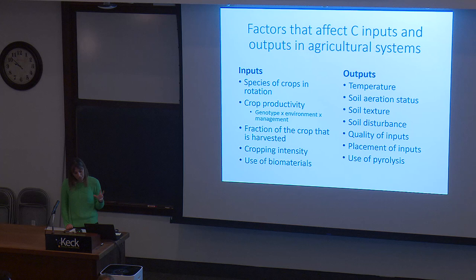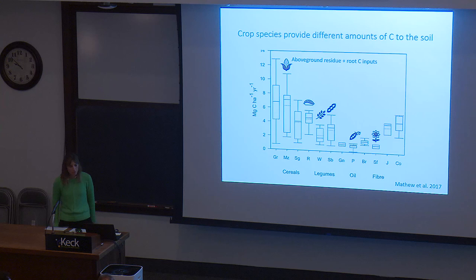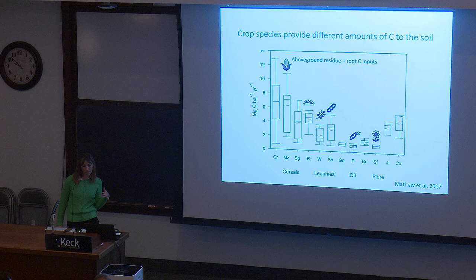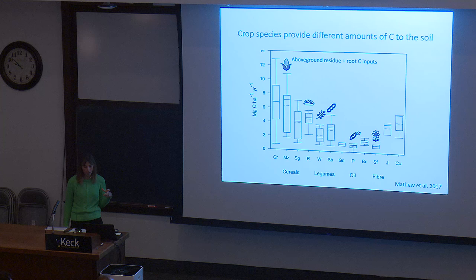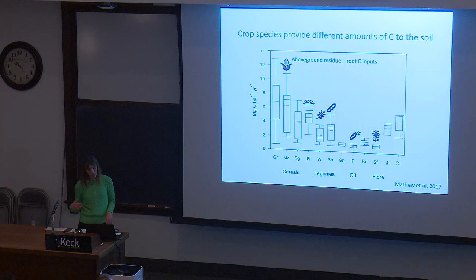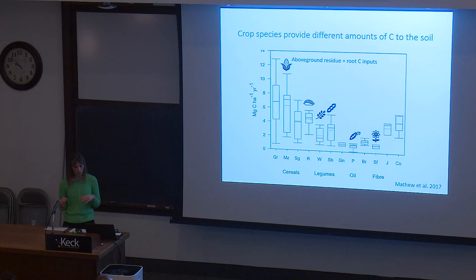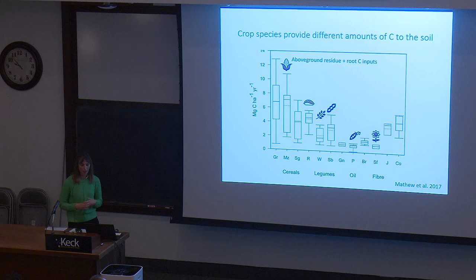Crop species provide different amounts of carbon to the soil. Corn (Zea mays) generally adds a lot of carbon to the soil. Soybeans, on the other hand, provide probably half of what corn does in terms of above-ground residue and root carbon inputs. Wheat is around similar or a little lower than soybean, and rice is intermediate between maize and wheat. Depending on which crops are used in the rotation, we have different amounts of carbon being returned to the soil, which factors into that balance between inputs and outputs.